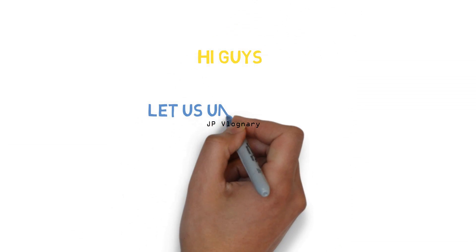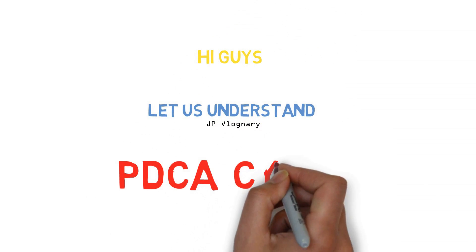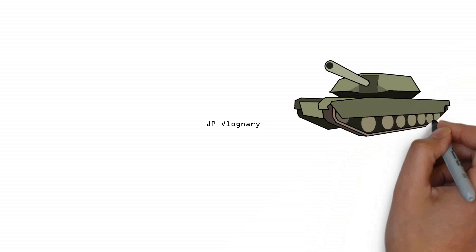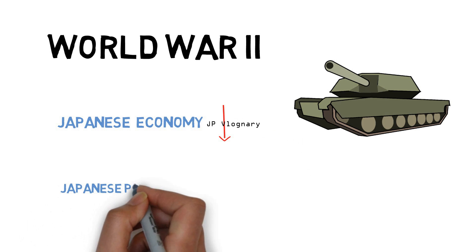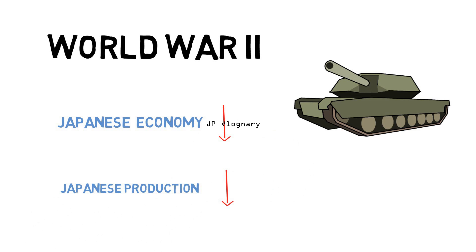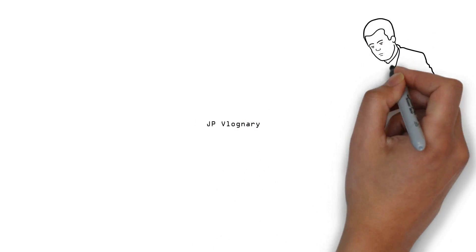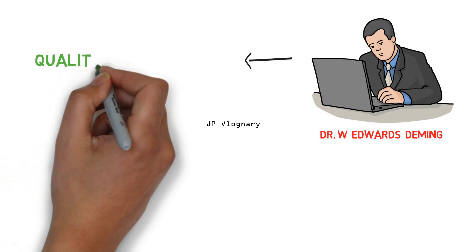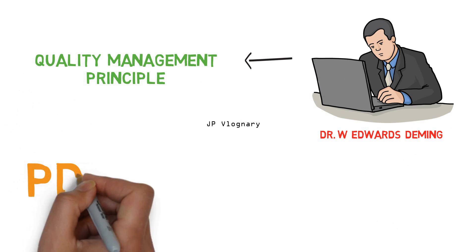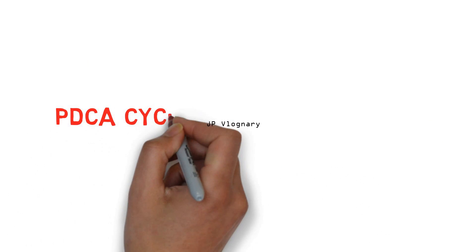In this video we will see what is the PDCA cycle. After World War II, the Japanese economy was shattered and the quality of their products had a poor image, so there was a need to improve the same. For this reason, Dr. W. Edwards Deming introduced a quality management principle: the PDCA cycle.